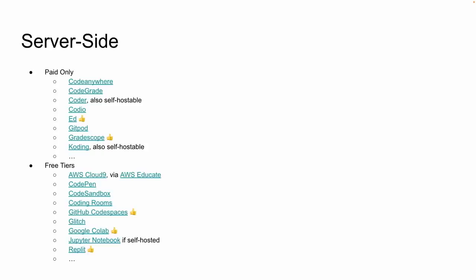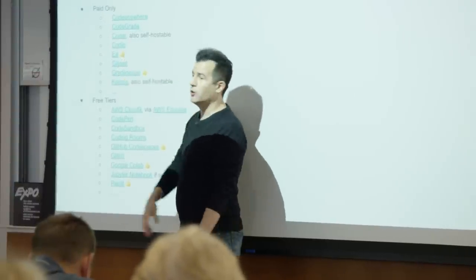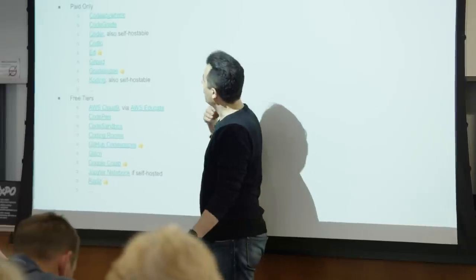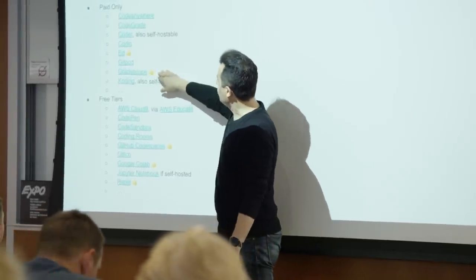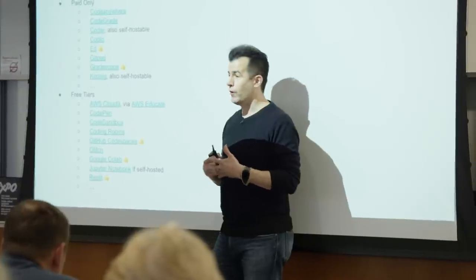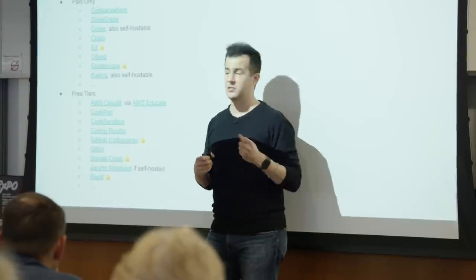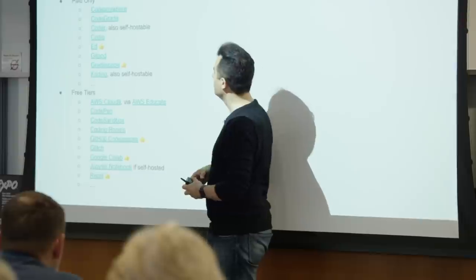On the server side, if you don't want students installing anything and want something entirely cloud-based, the list is longer and growing. We've categorized these into paid-only tools and free-tier tools. At Harvard, thanks to a university site license, we use a Q&A tool called ED — they're pretty generous with term-long trials. Gradescope, which came out of UC Berkeley and was acquired by Turnitin, makes it easier to grade paper-based and electronically submitted assessments. We use that with our undergraduates, but use the free tools for our larger online audience due to licensing costs.